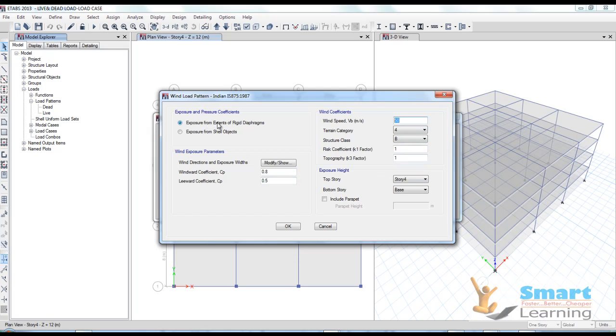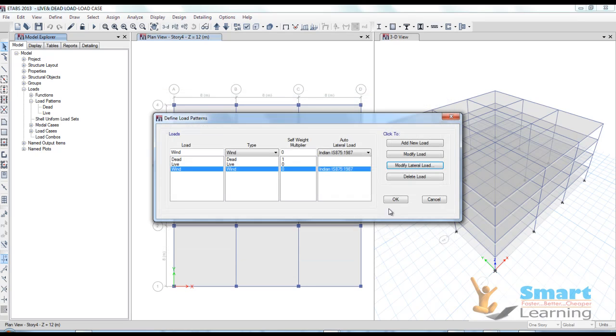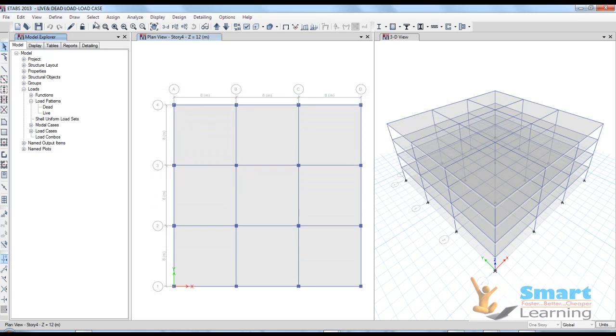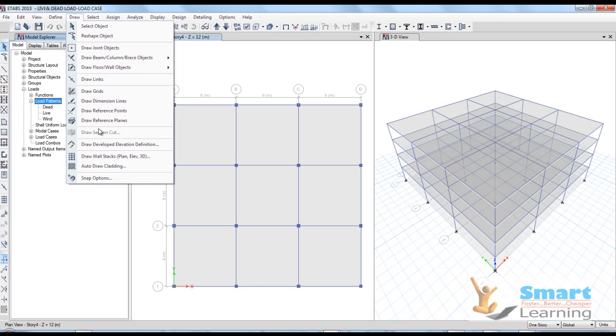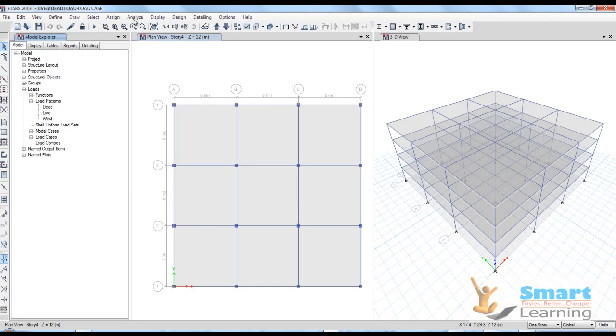The exposure from extent of rigid diaphragm - if you have rigid diaphragm you can configure that. Exposure from shell object I already told - if you have shear wall you can create it by going to any particular option. For cladding also you can apply the same wind load. So we have added this wind load.